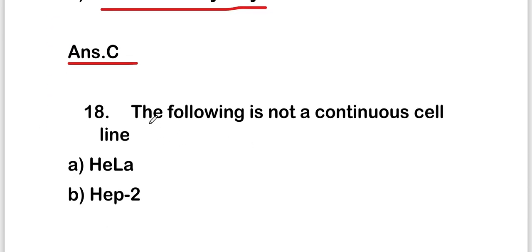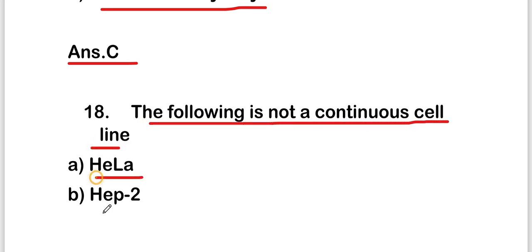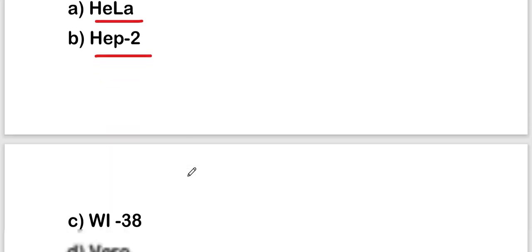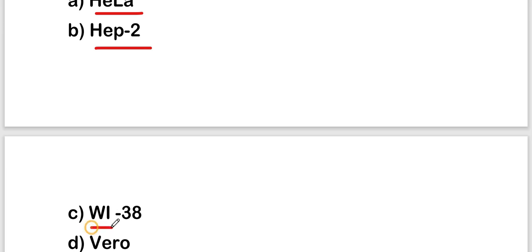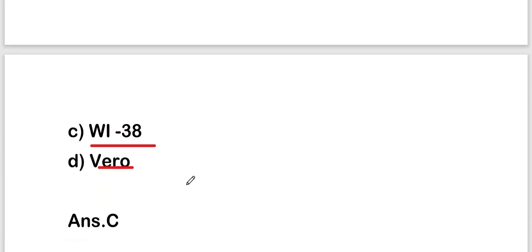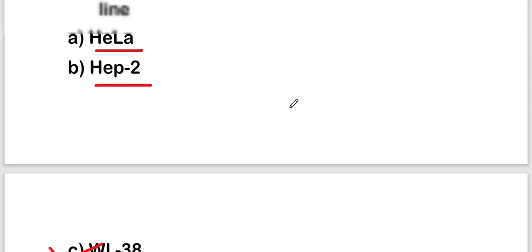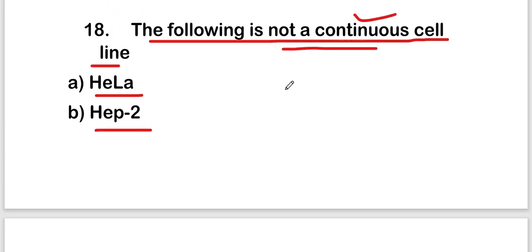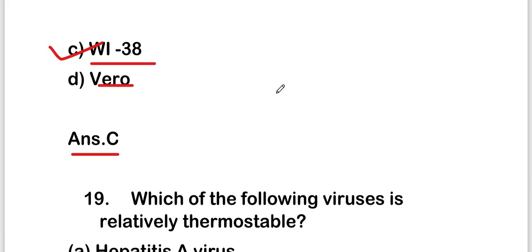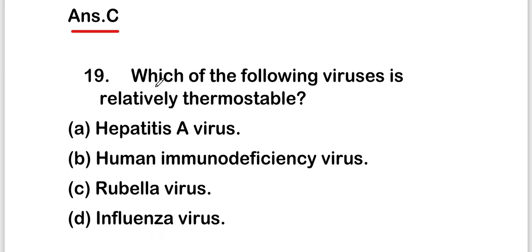The next question is: which of the following is not a continuous cell line — HeLa cell, HepG2, WI38, or Vero cell? The right answer is option C — WI38 is not a continuous cell line.